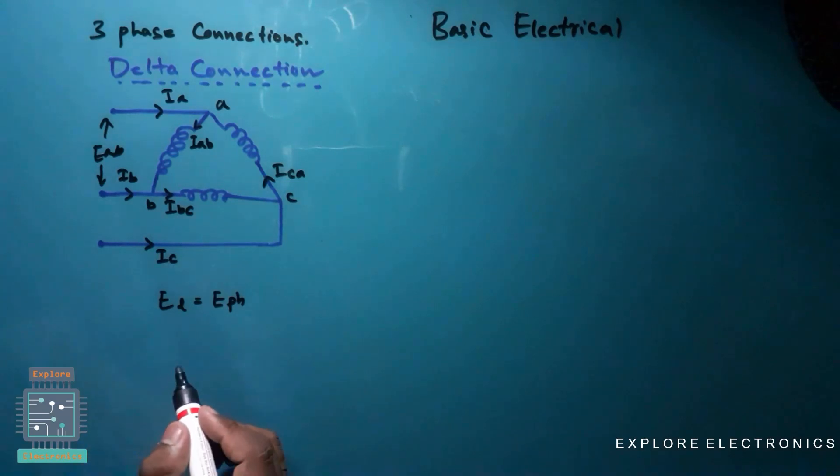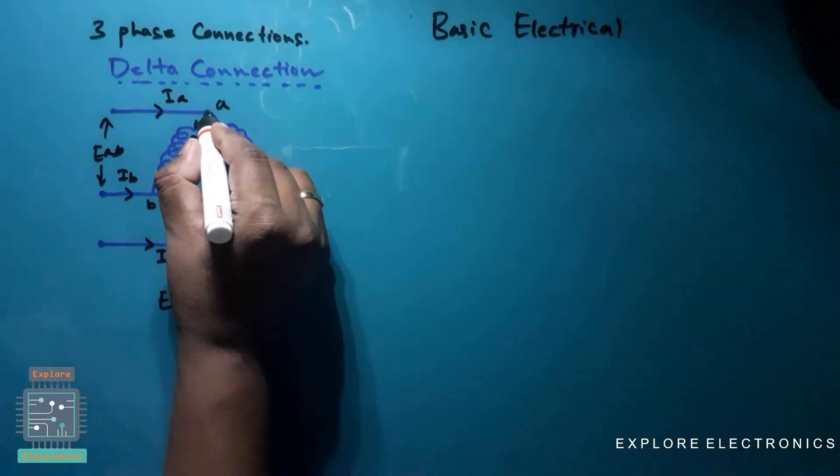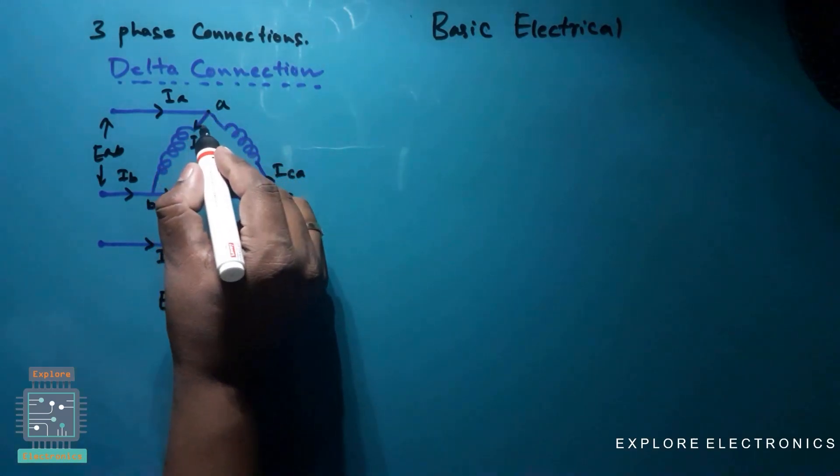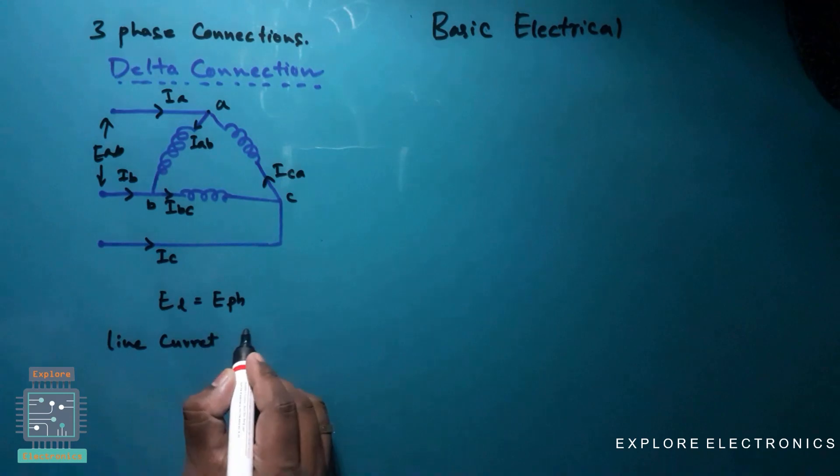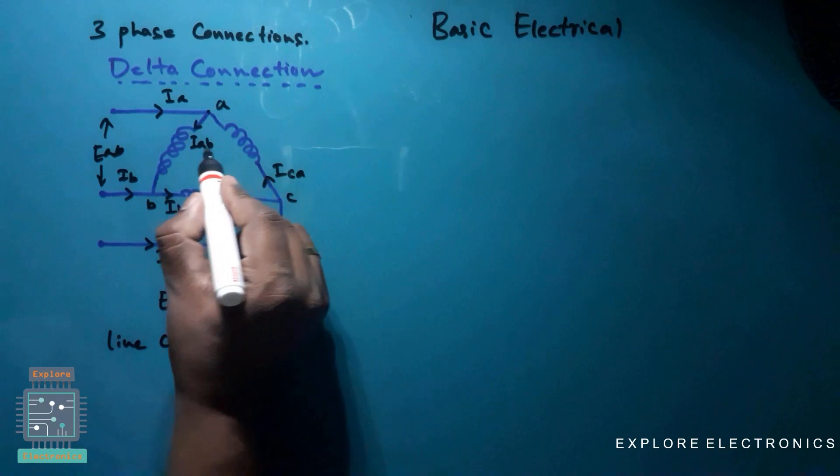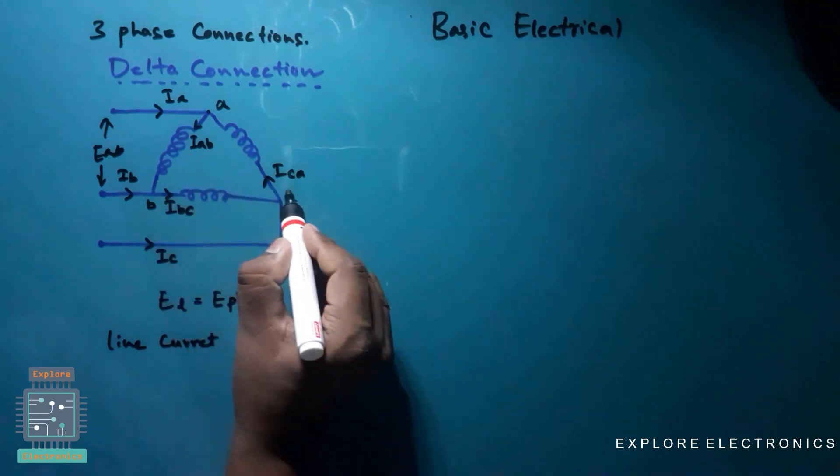So here I am going to consider this point A, and if I am going to write the expression for Ia, that is line current Ia, it will be equal to the two branches here.